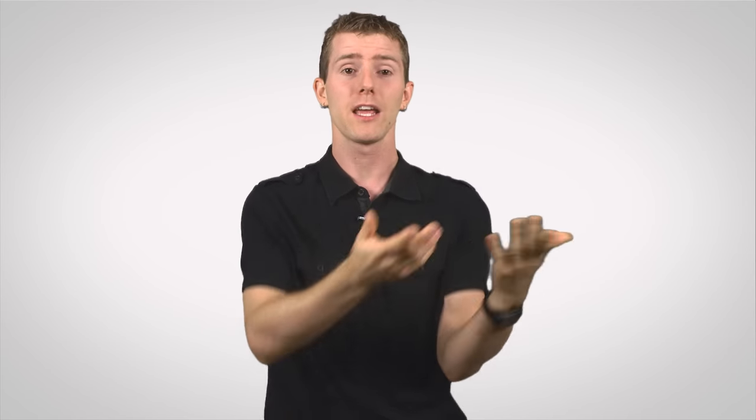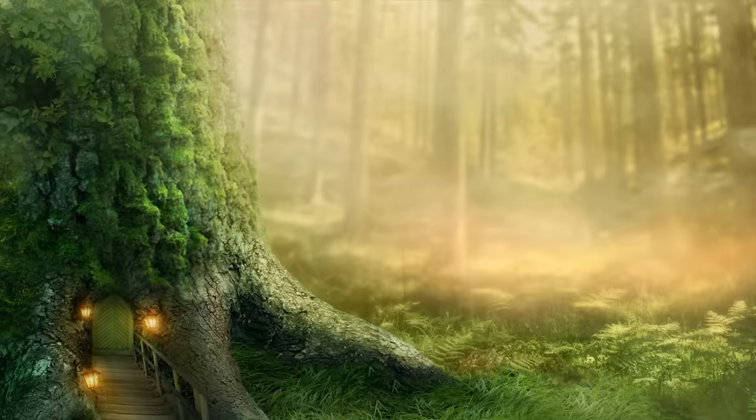So we covered the approximations, but what would true ambient occlusion look like? Well, in a perfect world with uber computers, every aspect of a scene's geometry would be taken into account, from your character's model to the bridge directly in front of you, all the way down to the tree 300 yards behind you.